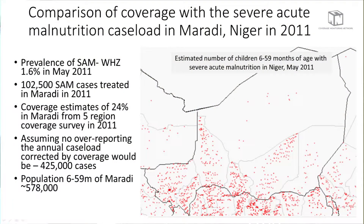Now, let's follow with a more complex example, taking into account the coverage survey results. This map represents the estimated number of children with severe acute malnutrition, based on population and the nutrition survey from May 2011. The regions with the highest number of children are Tilibari, way in the west, and Maradi, in the center. But the population concentration in Maradi has proved to be very fertile ground. Maradi, Niger has one of the strongest management of acute malnutrition programs in the world.